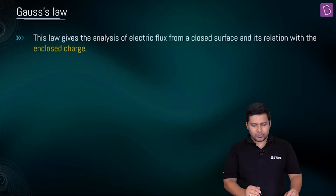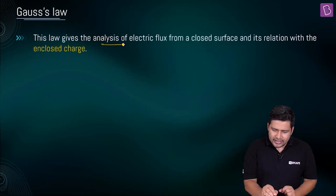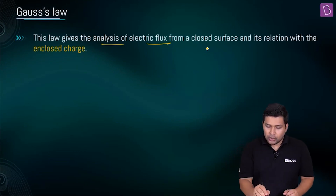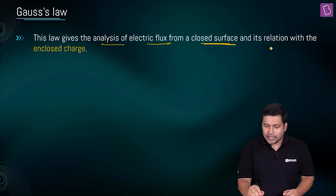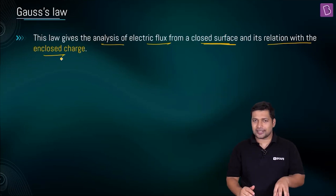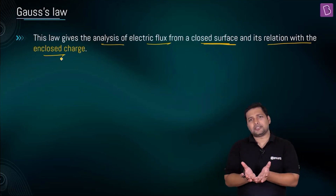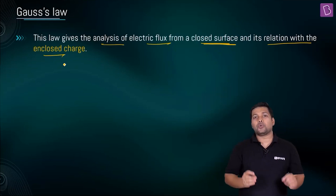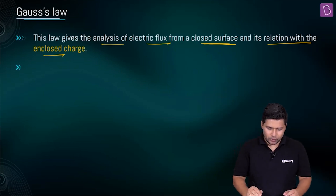Let us start off with Gauss's Law. What does this law give us? This law gives us the analysis of electric flux from a closed surface — it's very important. It gives us the analysis of electric flux from a closed surface and its relation with the enclosed charge. This law gives us a relation between flux, a three-dimensional closed surface, and the relation with the enclosed charge inside the surface.